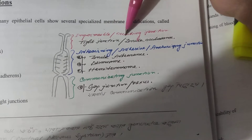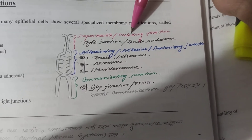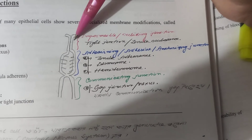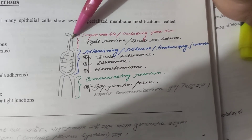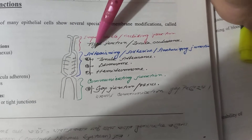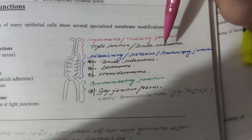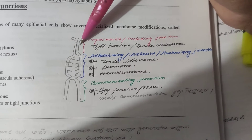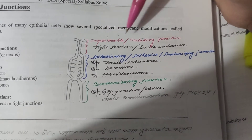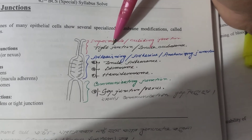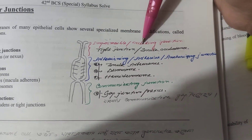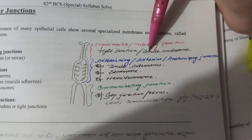Impermeable or occluding junction — meaning tight junction, zonula occludens. So, impermeable or occluding junction equals tight junction equals zonula occludens.